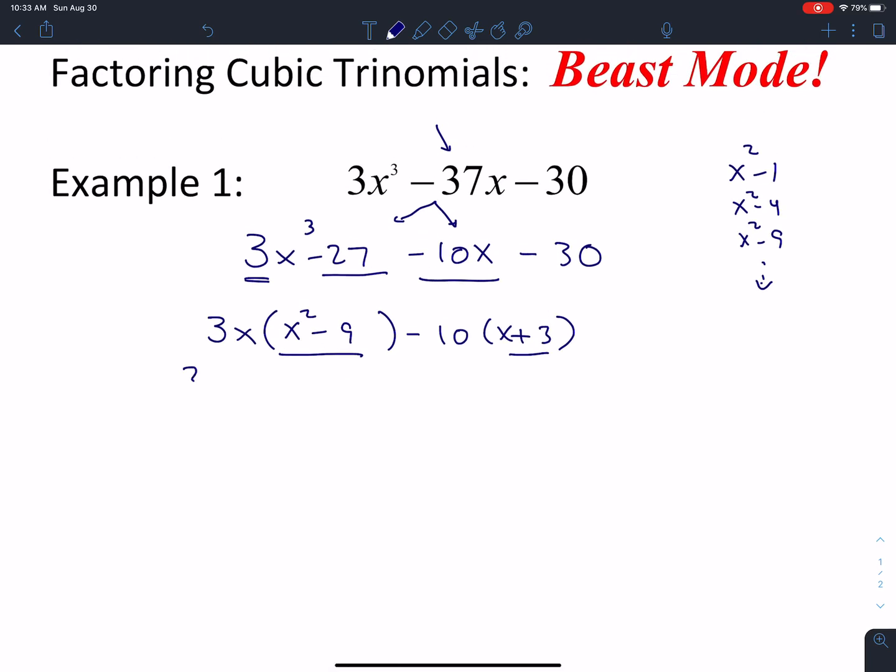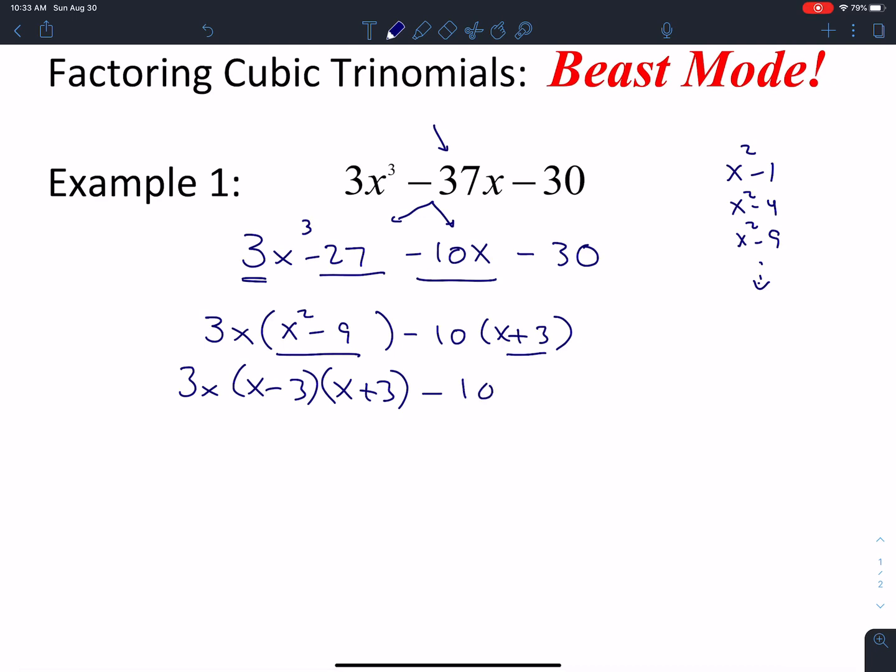In this case, 3x times (x - 3)(x + 3) minus 10 times (x + 3). We see the common term, factor that out, x + 3. And then I'm going to multiply these terms together before bringing them into the quantity remaining, 3x² - 9x - 10.